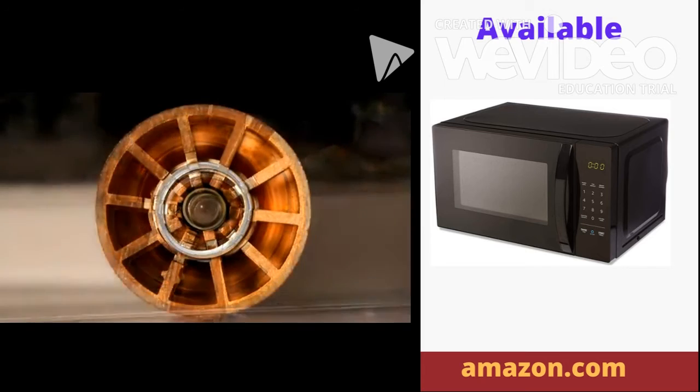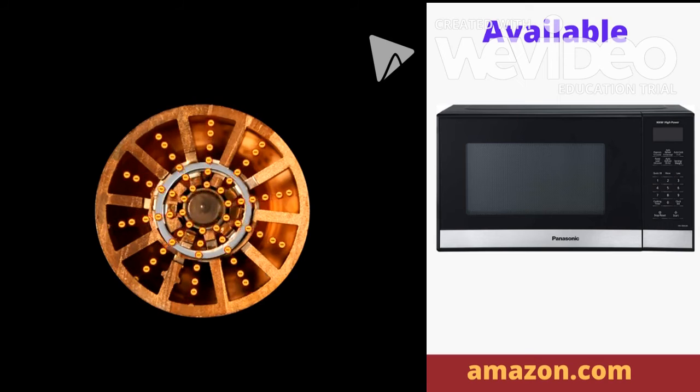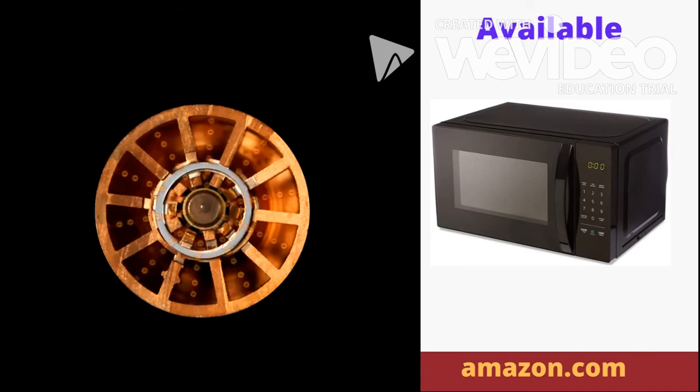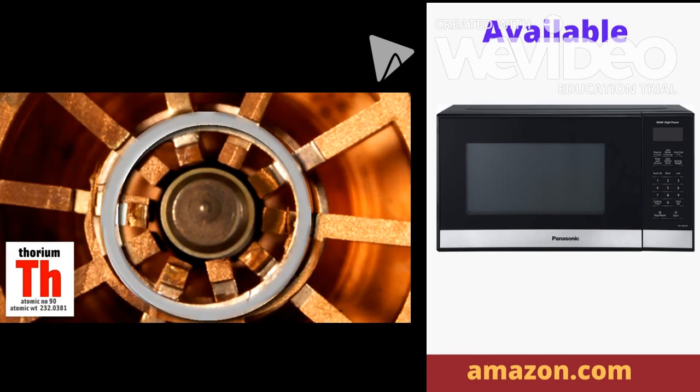You apply a large voltage across both the inner filament and the circular copper outside. This voltage boils electrons off the center filament and they fly toward the circular copper section. The filament is made from tungsten and thorium: tungsten because it can withstand high temperatures, and thorium because it's a good source of electrons.